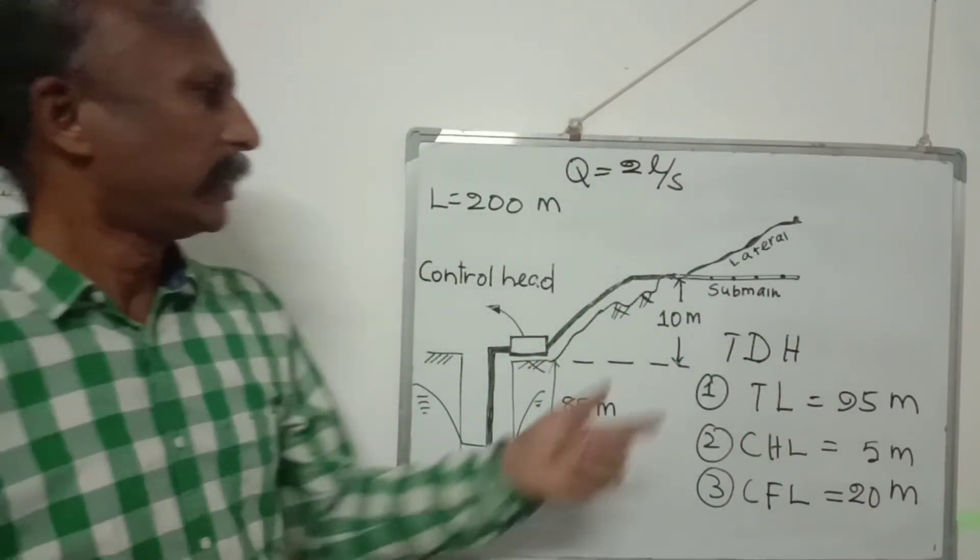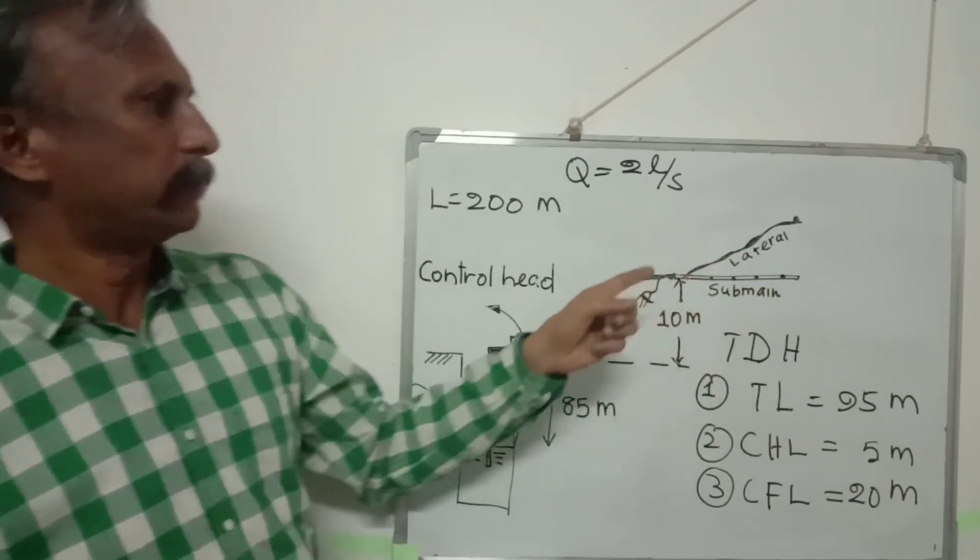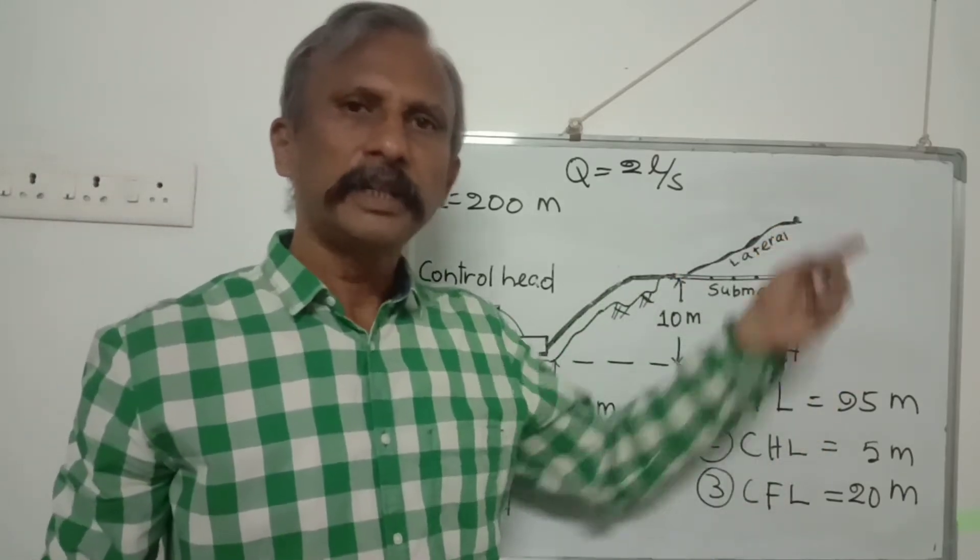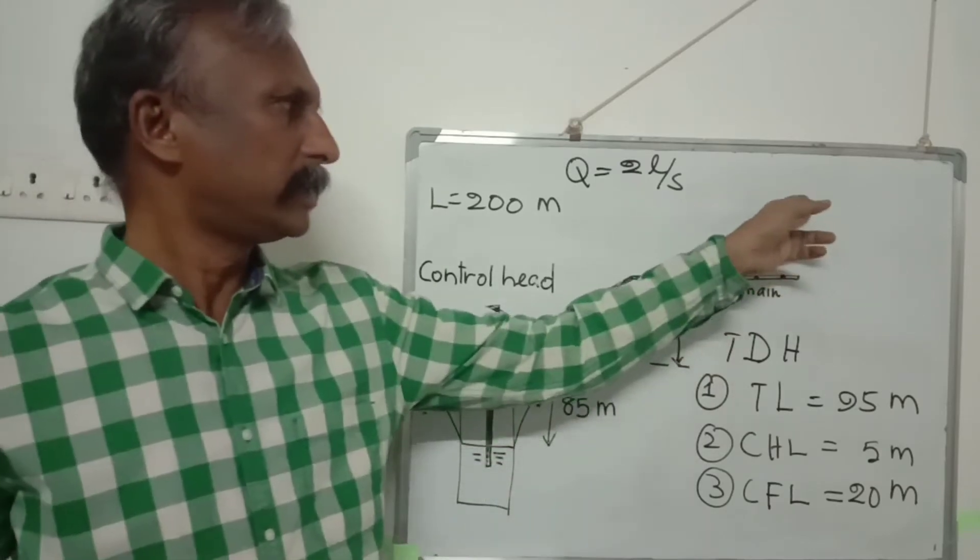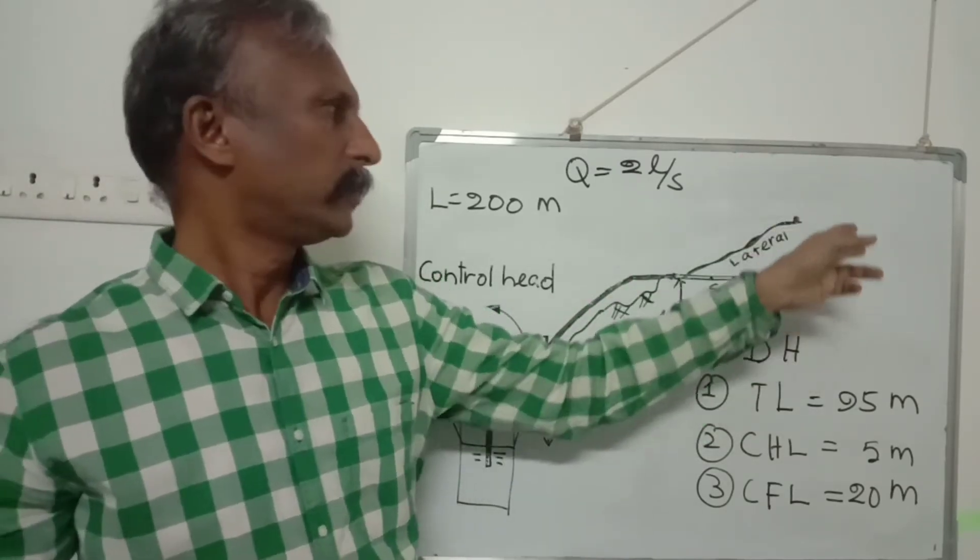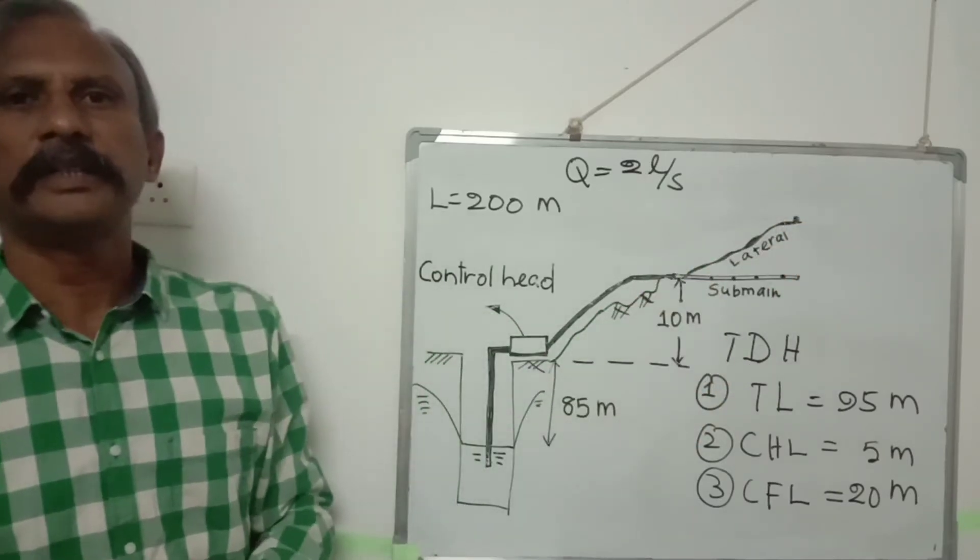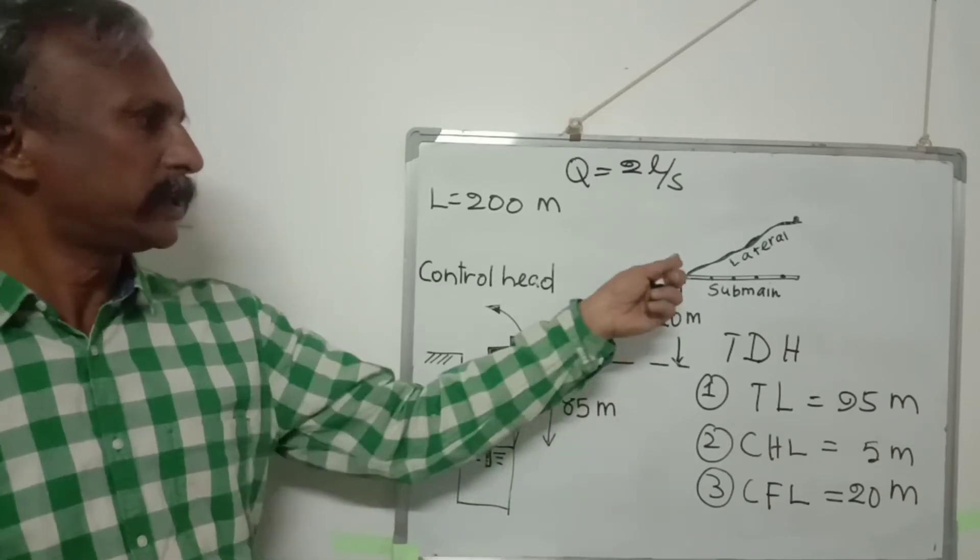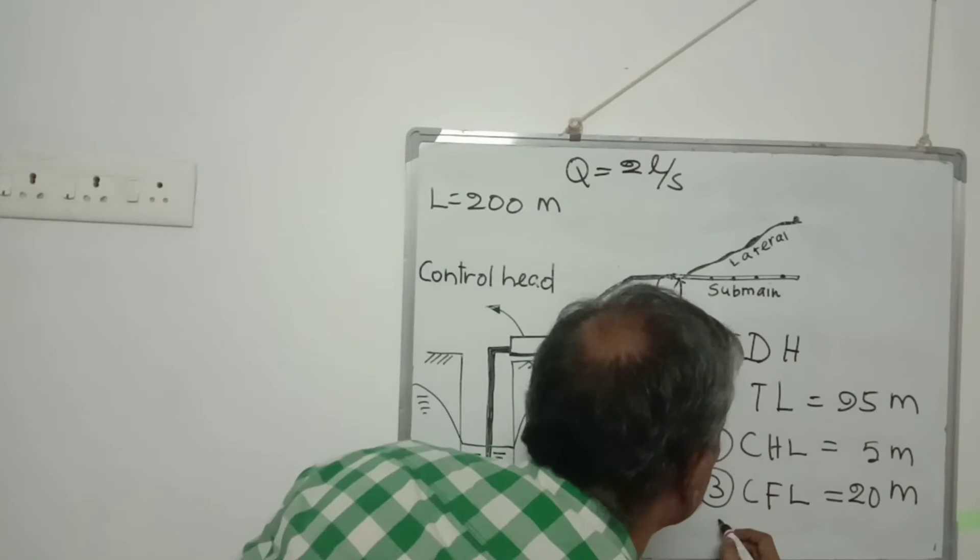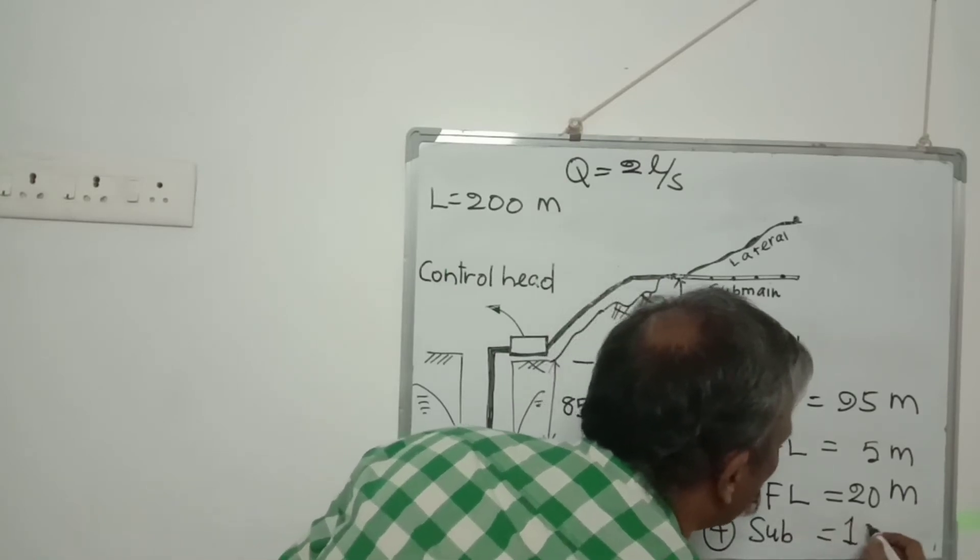Lastly, we have to account for the pressure needed at the start of the submain. We know that the pressure needed at the dripper is 10 meters. So we need at least more than 10 meters at the start of the submain. Here also it is customary to take the pressure needed at the start of the submain to be 12 meters.